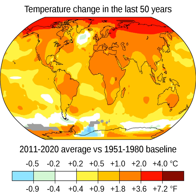Many of these impacts are already felt at the current level of warming, which is about 1.2 degrees Celsius (2.2 degrees Fahrenheit). The IPCC has projected significant increases in these impacts as warming continues to 1.5 degrees Celsius (2.7 degrees Fahrenheit) and beyond. Additional warming increases the risk of triggering critical thresholds, called tipping points. Responding to these impacts involves both mitigation and adaptation.